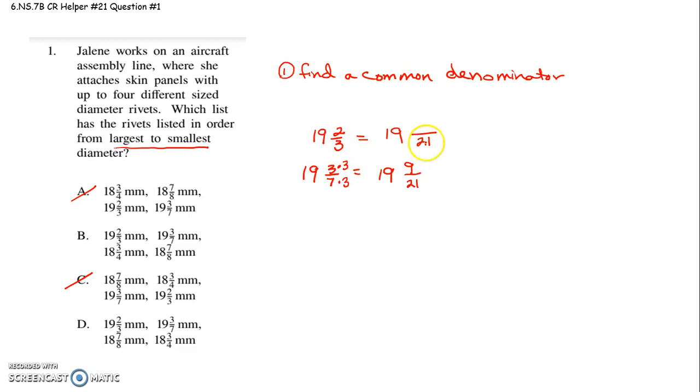Then here, to get from 3 to 21, I multiply 3 by 7, which forces me to multiply 2 by 7. 2 times 7 is 14. So which is larger? This one's definitely larger. So that tells me 19 and two-thirds is larger than 19 and three-sevenths. So this is a larger one.